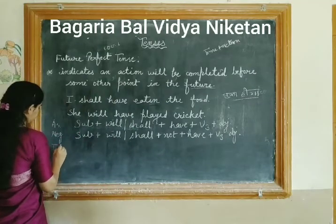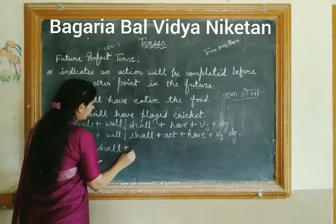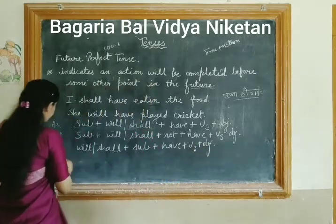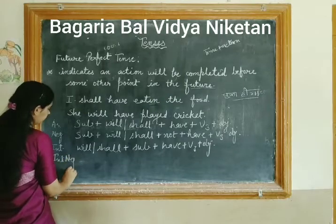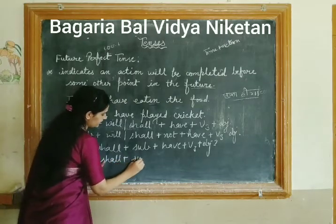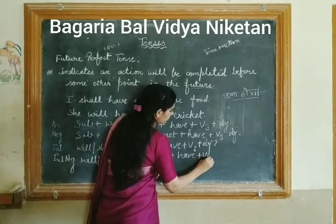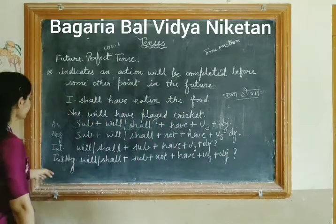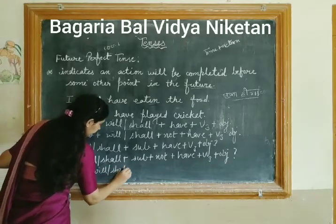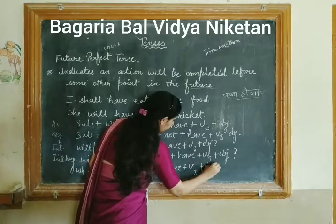For interrogative sentences, the helping verb comes first, then the subject, then 'have,' then the verb third form, then the object, with a question mark at the end. For negative interrogative: helping verb first, then subject, then 'not' after the helping verb, then 'have,' verb third form, object, and question mark. For WH questions: WH word first, then helping verb, then subject, then 'have,' verb third form, and object.